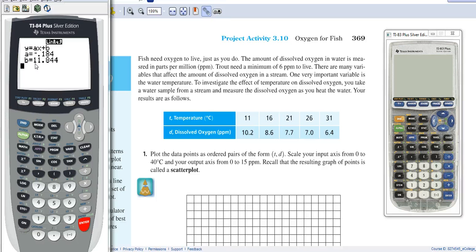And to begin with, at zero, when the temperature is zero degrees Celsius, the amount of dissolved oxygen is 11.844 parts per million. Now that's for the 84 calculator.